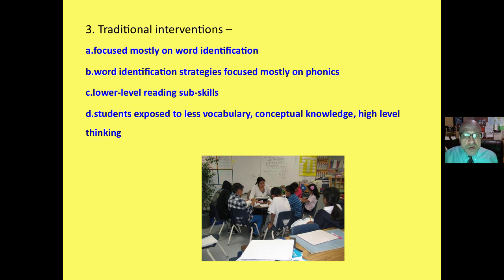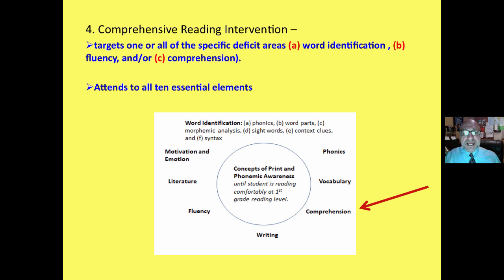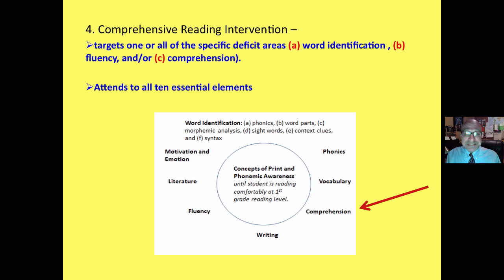Students, therefore, were exposed to less vocabulary, less conceptual knowledge, less high-level thinking, and a lot less fun and enjoyment. A comprehensive reading intervention targets one or all of the specific deficit areas — word identification, fluency, and/or comprehension — and at the same time attends to all ten essential elements.